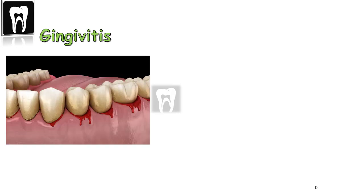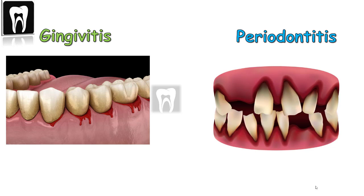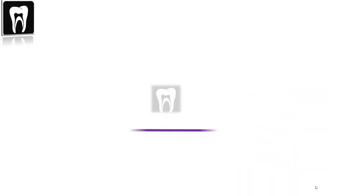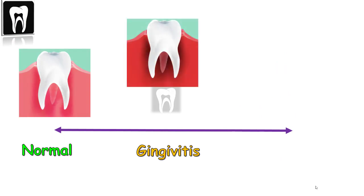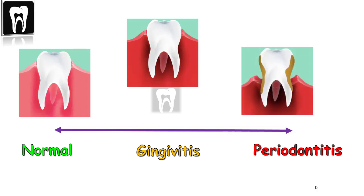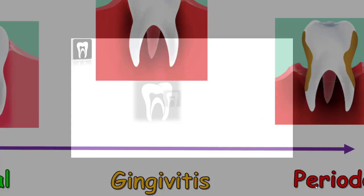The major difference between gingivitis and periodontitis is that gingivitis can be reversible with good oral hygiene. In periodontitis, because it affects the underlying bone, it can cause permanent damage and tooth loss. It's like a spectrum: normal gums at the start, then inflammation which is gingivitis, and then in the advanced stage, periodontitis with bone loss and tooth loss.